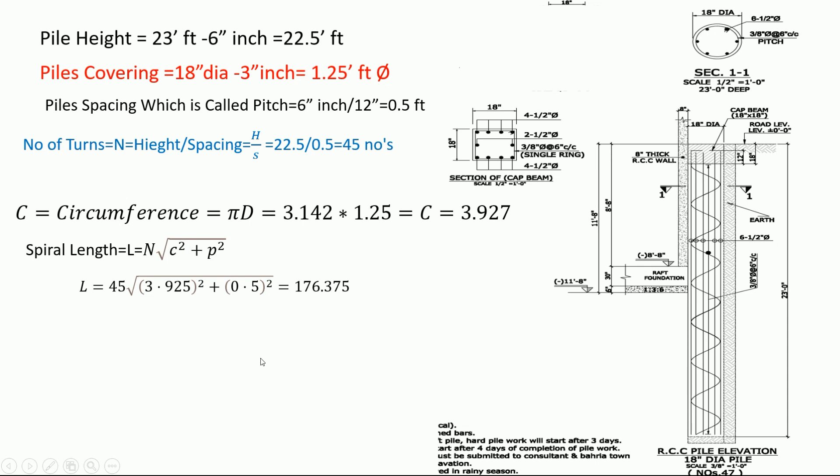Steel weight calculation: 3/8 inch spiral diameter, we divide this value 0.375 divided by 12, which equals 0.03125. We convert this value per feet. The per feet formula is 3 times 3 divided by 42.90, which equals 0.17 per feet. Weight equals 176.375 times 0.17 equals 30 kg per pile. We have 47 number of piles, so we multiply: 30 times 47 equals 1410 kg.